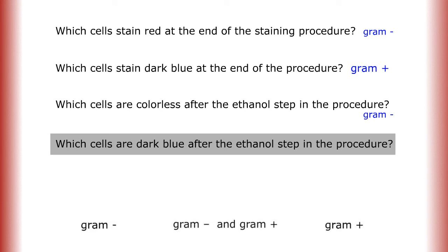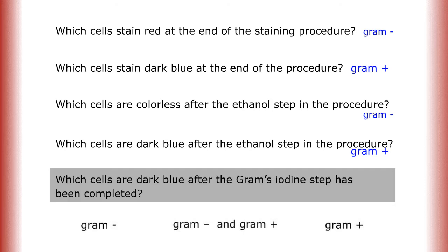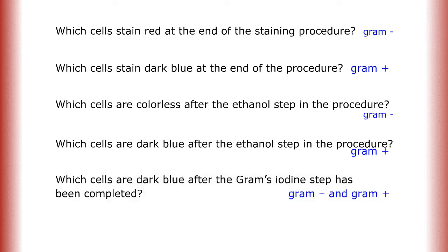Which cells are dark blue after the ethanol step in the procedure? Gram-positive. And which cells are dark blue after the gram's iodine step has been completed? Gram-negative and Gram-positive.